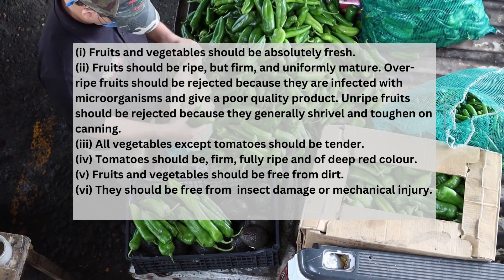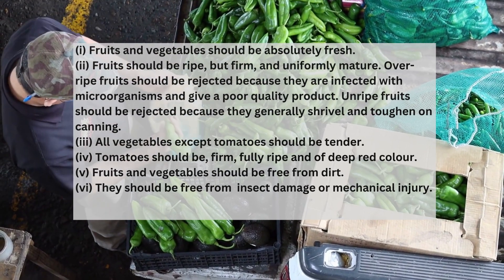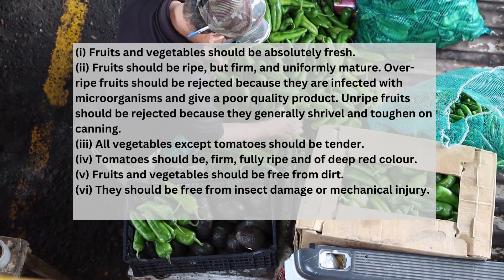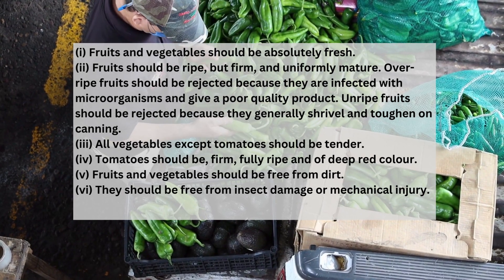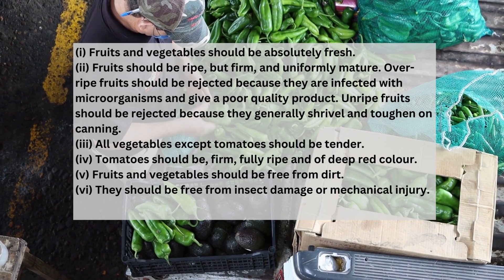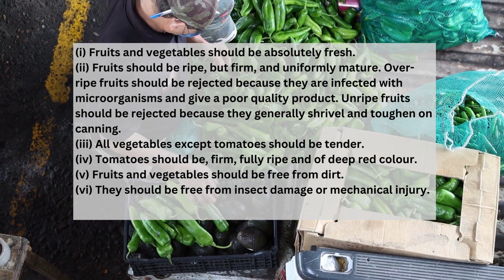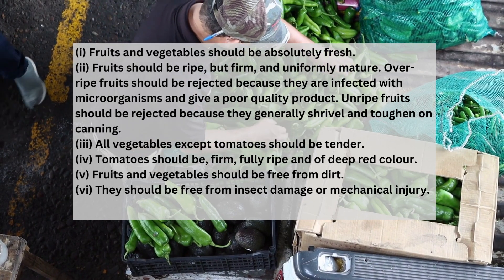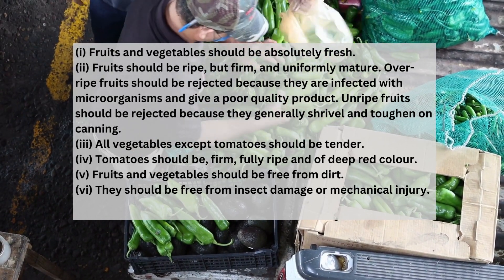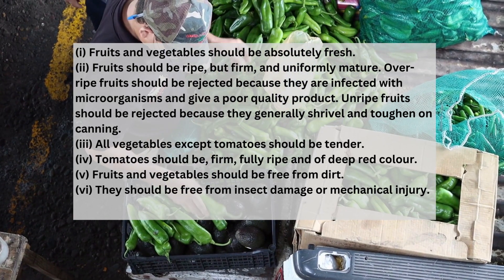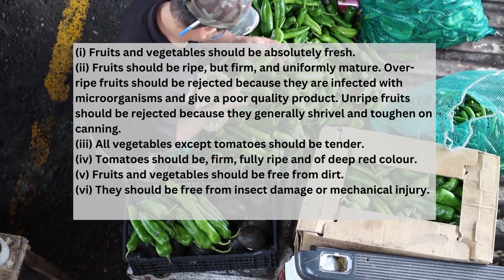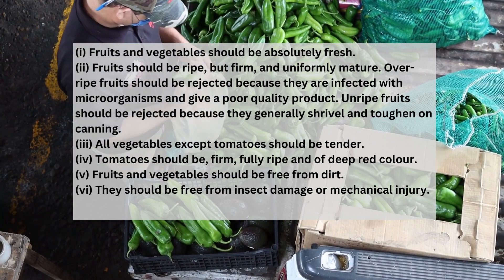Unripe fruits should be rejected because they generally shrivel and toughen on canning. All vegetables except tomatoes should be tender. Tomatoes should be firm, fully ripe and of deep red color. Fruits and vegetables should be free from dirt, insect damage, or mechanical injury.